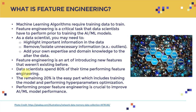Feature engineering is an art of introducing new features that weren't existing before. You have raw data, and you want to tweak the features somehow to come up with usable features that will train the model and allow it to generalize well. Data scientists spend around 80% of their time performing feature engineering — this is very important.